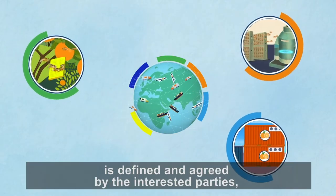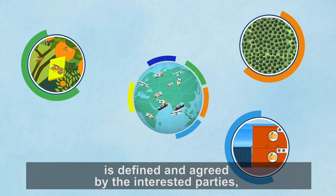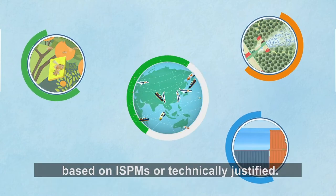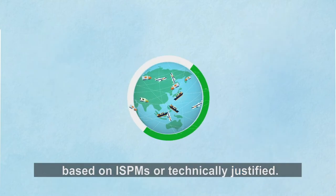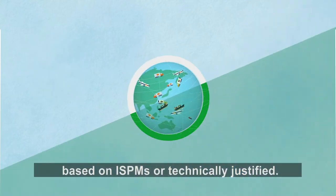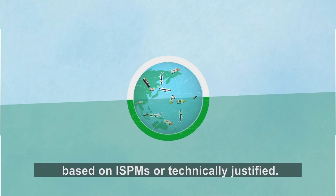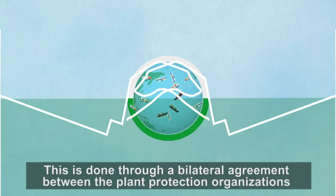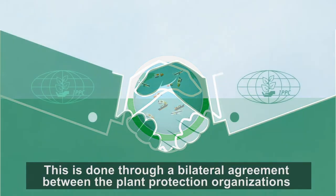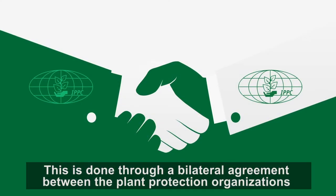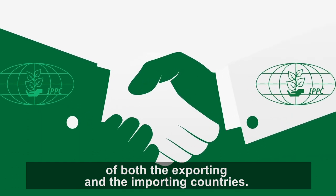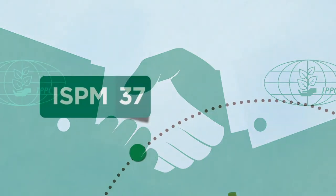This contributes to assuring high quality of the fruits to be exported. The phytosanitary scheme under which trade might occur is defined and agreed by the interested parties, based on ISPMs or technically justified. This is done through a bilateral agreement between the plant protection organizations of both the exporting and the importing countries.